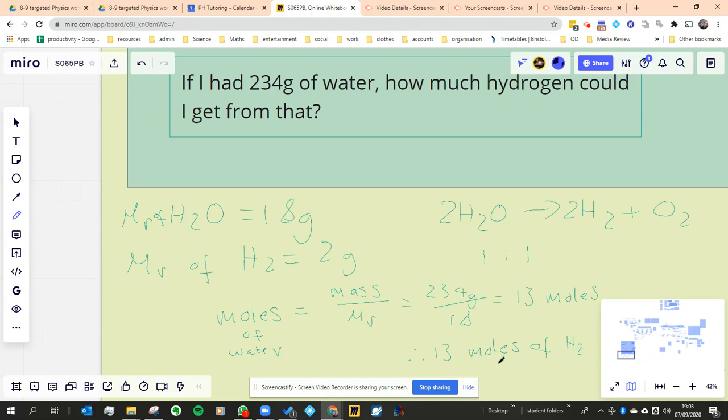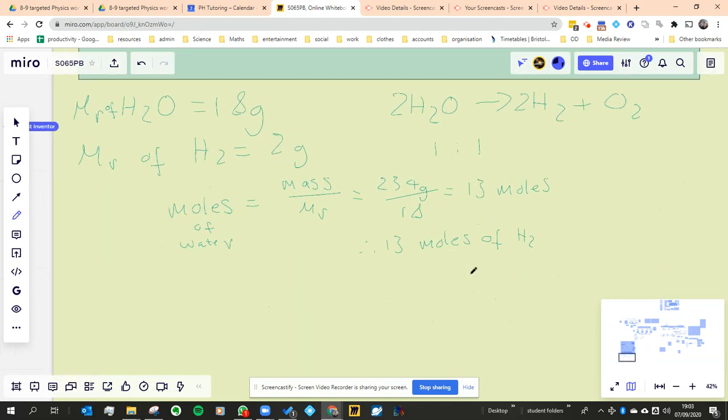So we're a step closer. We know we want to know the mass of hydrogen. Now we've worked out the moles of hydrogen. We just got to work out what mass of that would be. 13 moles of hydrogen, which would be equal to 13 times the molar mass of hydrogen. I'm just going to write it here, just so that I can read my notes properly later on.